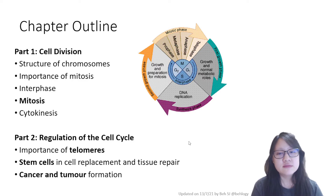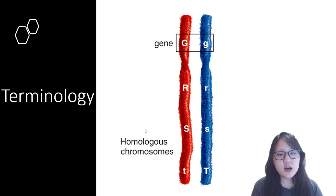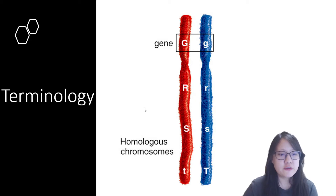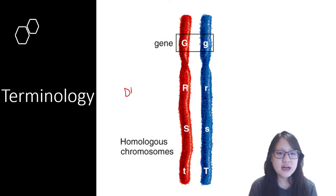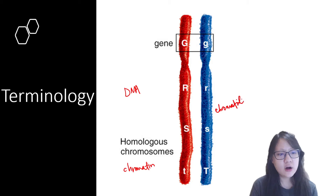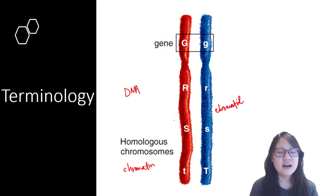Before we start off part 1 and part 2, let's begin with a little introduction outlining the terminology. There are a few similar terms you've heard of: gene, chromosome, DNA, and chromatin. And today we'll be learning another word called chromatid. So what are all these words and how exactly are they different?